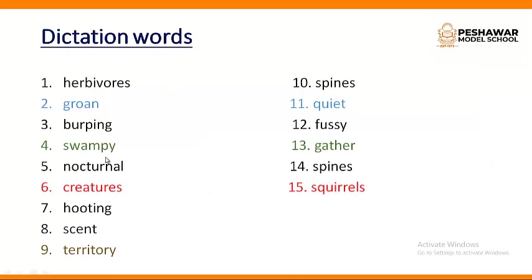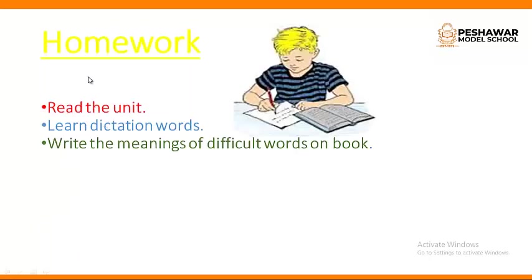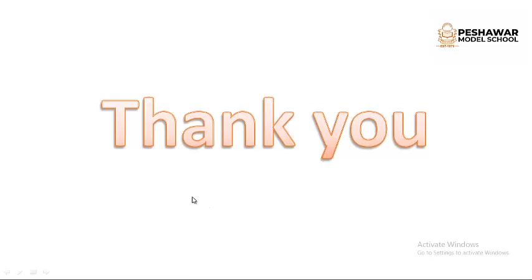Here are the dictation words. You have to learn these words and your parents will take the test: herbivores, groan, burping, swampy, nocturnal, creatures, hooting, scent, territory, spines, quiet, fussy, gather, squirrels. For homework, read the unit for better understanding and learn the dictation words. Write the meanings of difficult words in your book — underline those words and write the meanings so you know them. Stay safe and stay healthy. Allah Hafiz.